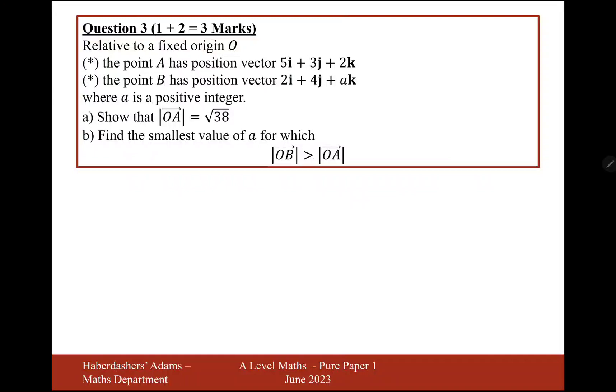Show that |OA| = √38. So for |OA|, that's going to be a Pythagoras calculation of 5 squared, add 3 squared, add 2 squared. Got to show a bit of working for this because the answer is given to us: 25 + 9 + 4. And that does in fact give us 34 + 4 = 38. So there we are, as required.